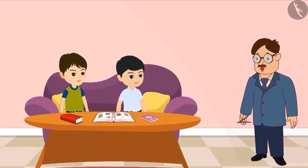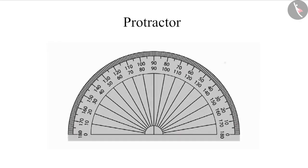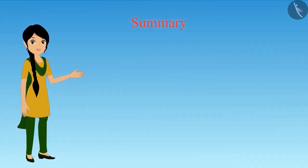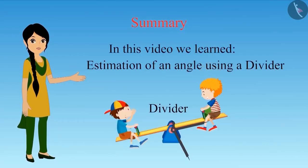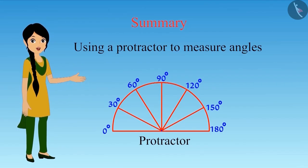With the help of this protractor, we can easily measure any angle. In your geometry box, you will find a protractor. It has numbers from 0 to 180 on both sides, from right to left and left to right. In this way, we can measure the angle from both sides using the protractor. In this video, we learned estimation of an angle using a divider and using a protractor to measure angles.